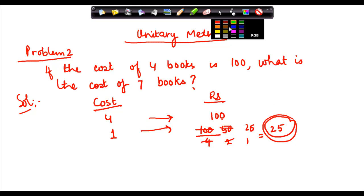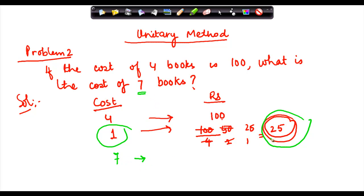Okay? Now, if I have cost of one book, what do I need to do here? I have been asked to find out the cost of seven books. So, how do you find it? If one book cost twenty-five, seven will cost me twenty-five into seven is equal to one seventy-five. So, the cost of seven books is rupees one seventy-five.